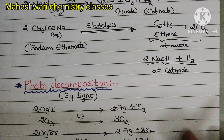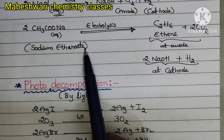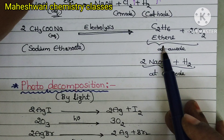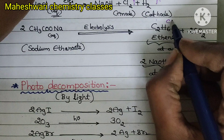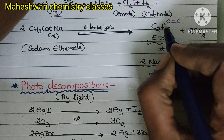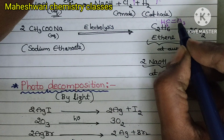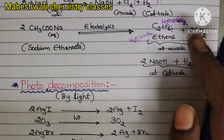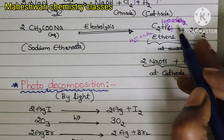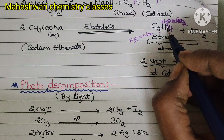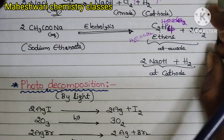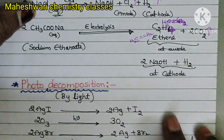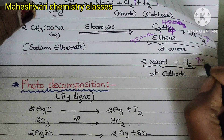Next, sodium ethanoate in aqueous condition undergoes electrolysis. Here, C2H4 is released — CH2 double bond CH2, which is C2H4. Carbon dioxide gas is also released. At the anode, carbon dioxide is released, and at the cathode, sodium hydroxide and hydrogen gas are released.